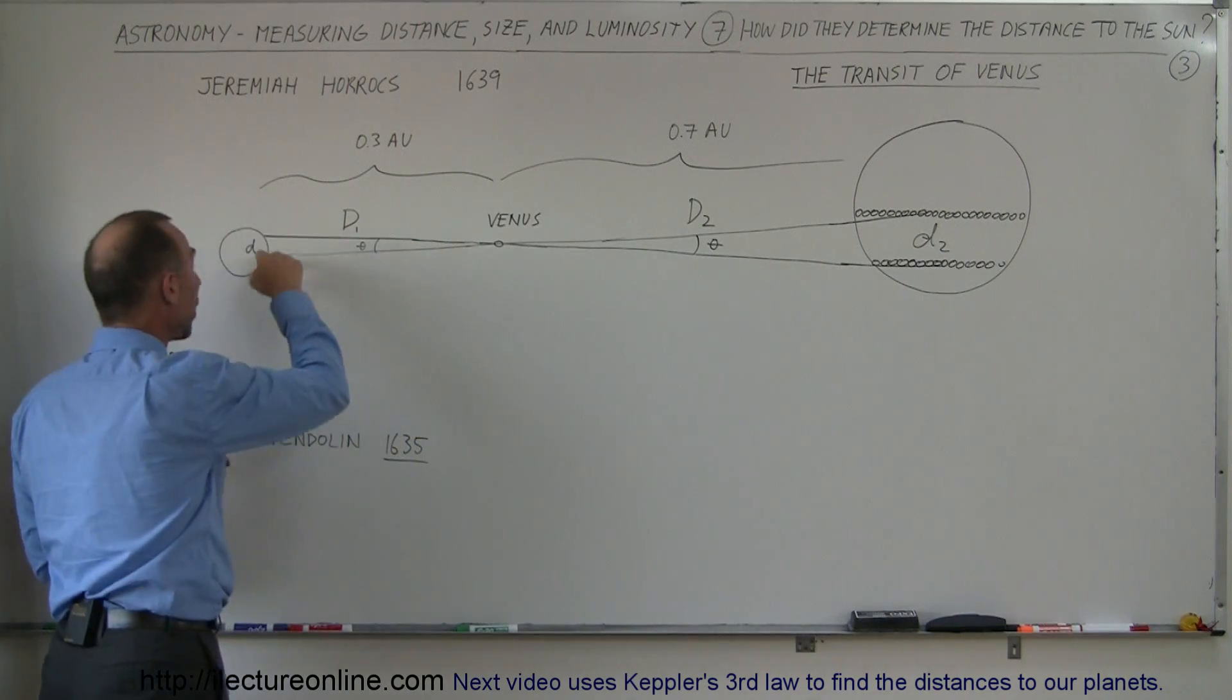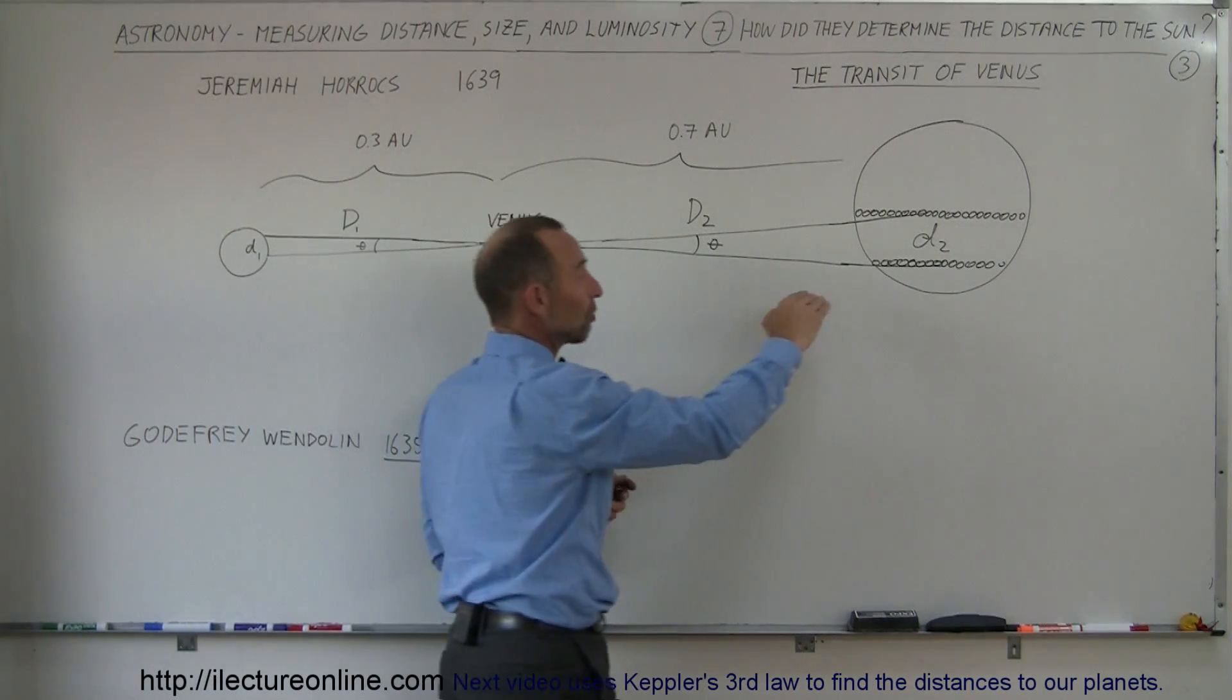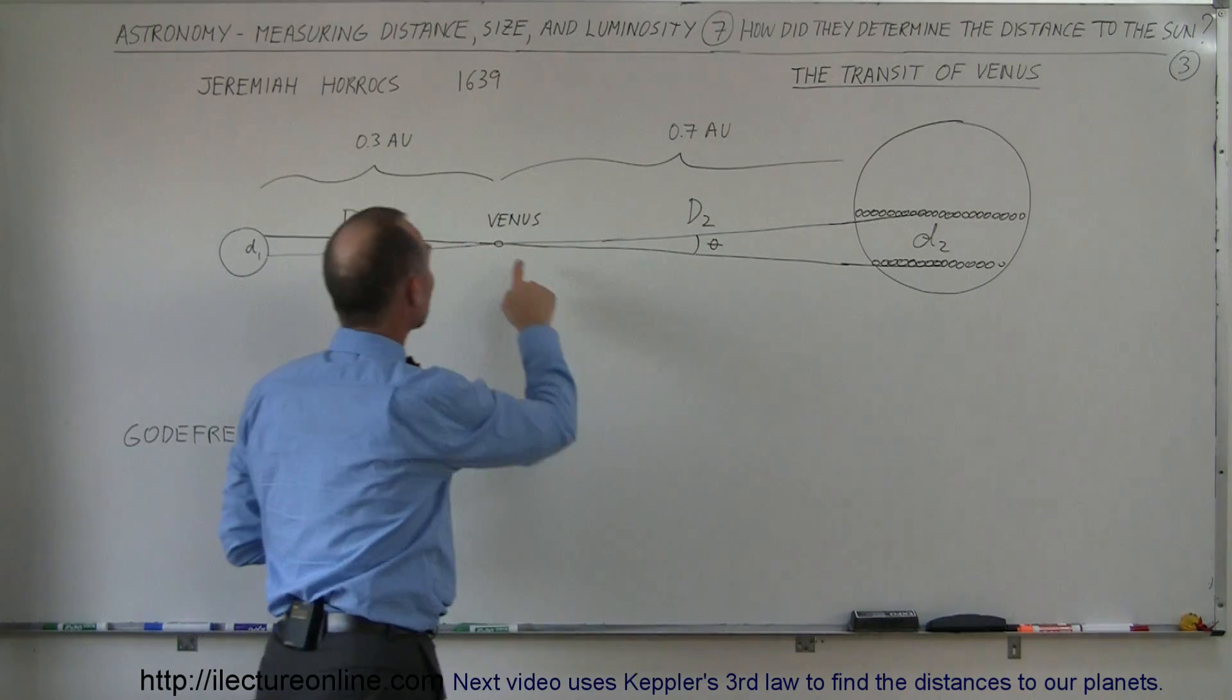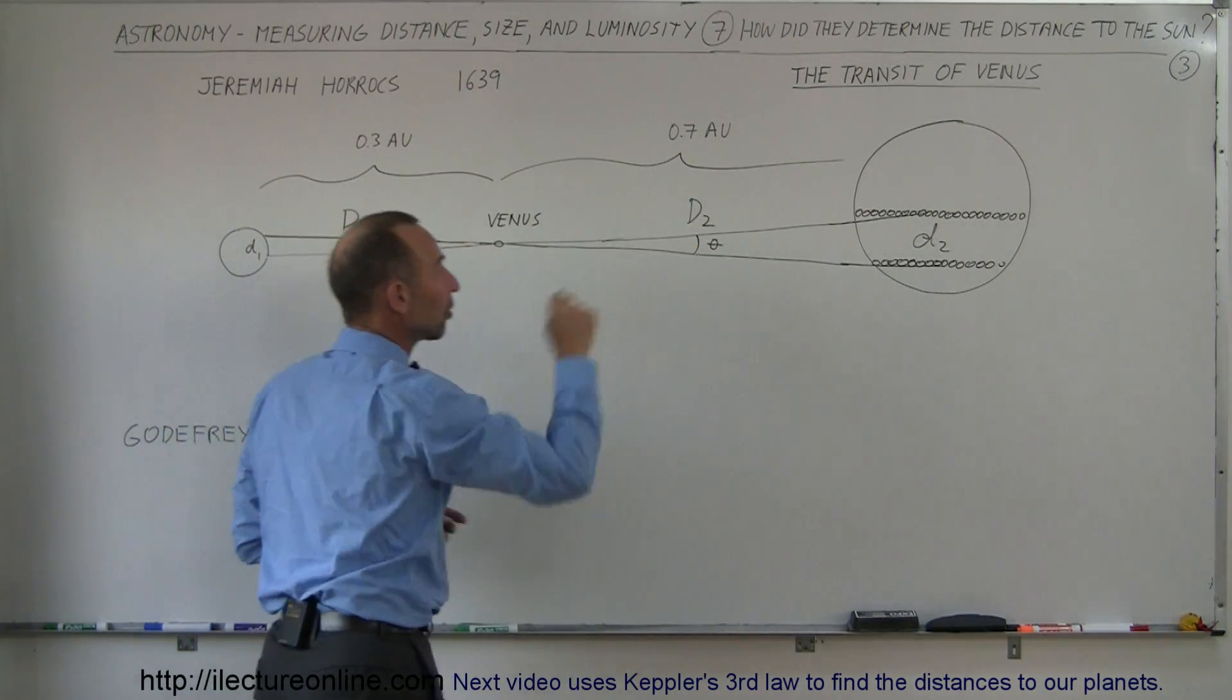And depending upon where on the Earth you are, Venus will then travel at a different location across the sun's disk because of your relative angle between where Venus is at, where the Earth is at, where the sun is at.